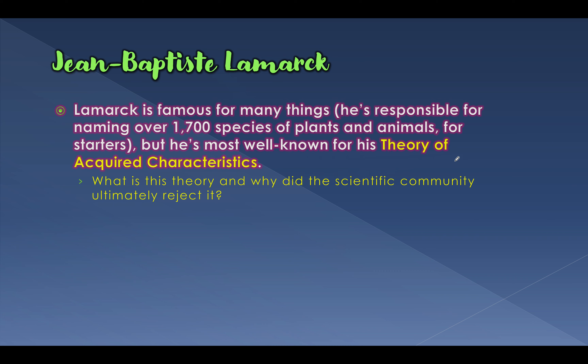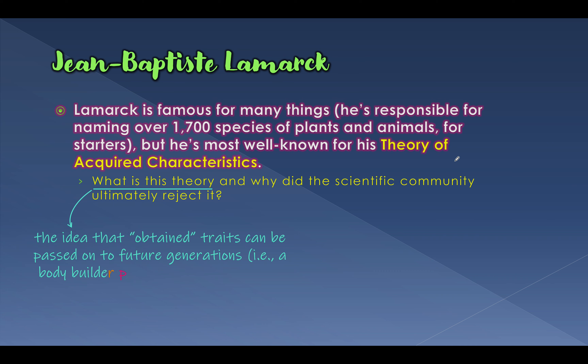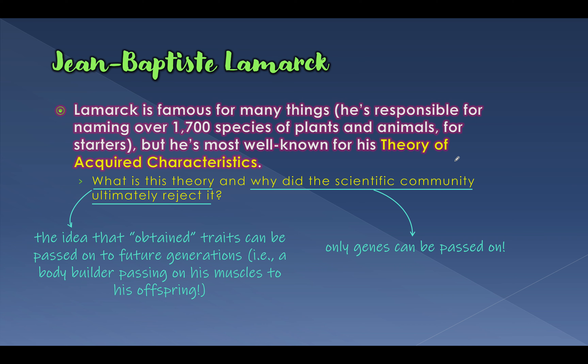The theory of acquired characteristics is wrong, but at least he was getting to the point where we were understanding that things adapted to their environment. His theory was that if you obtained a trait over your lifetime, you could pass it on to future generations — for example, if you built huge muscles as a bodybuilder, you could just pass on big muscles to your offspring. We rejected that as a scientific community because you can't pass on acquired characteristics; you can only pass on heritable genetic traits that are part of your DNA, since DNA is what ends up in the sperm and egg.